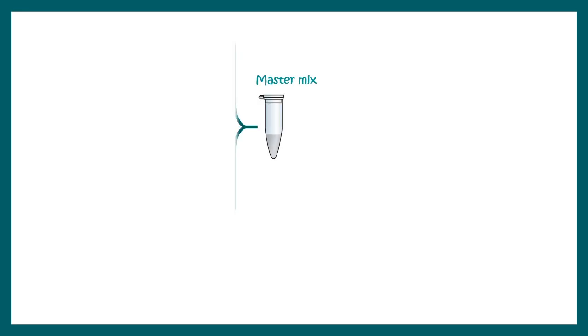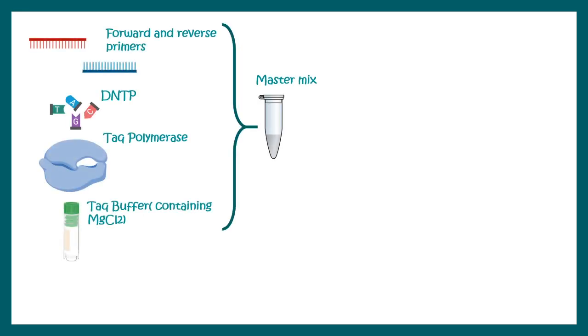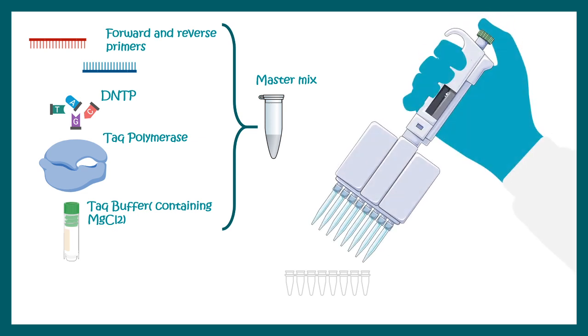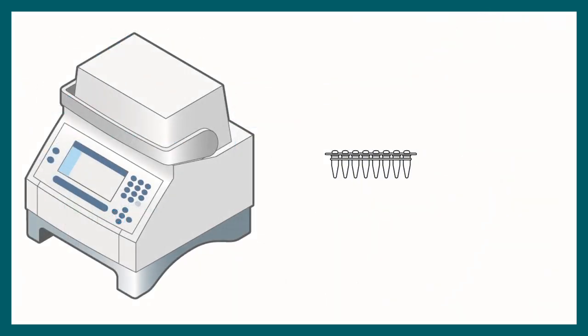Then we would prepare a master mix which would have all the PCR components like forward and reverse primers, which we would use to detect our construct, and then there would be dNTPs, Taq polymerase, and all other buffer components. Finally, we would set the PCR reaction and place it into the PCR machine.